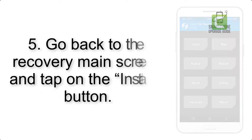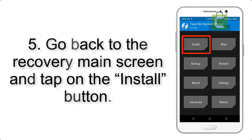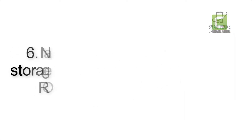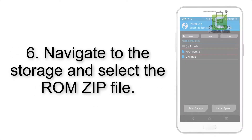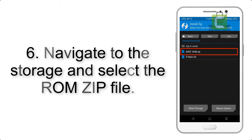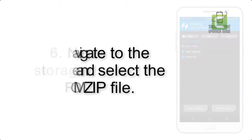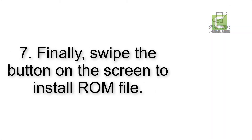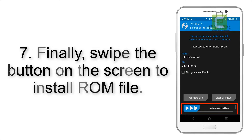Step 5: Go back to the recovery main screen and tap on the Install button. Step 6: Navigate to the storage and select the ROM zip file. Step 7: Finally, swipe the button on the screen to install the ROM file.